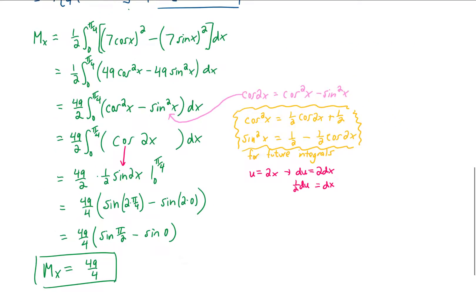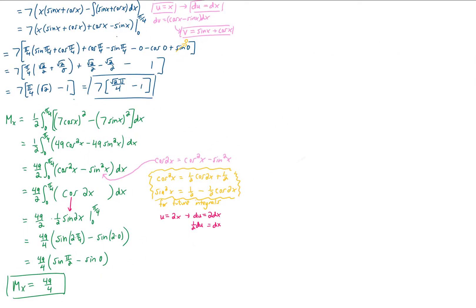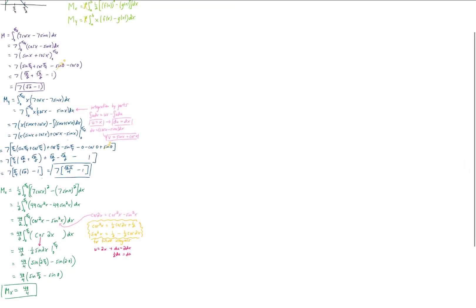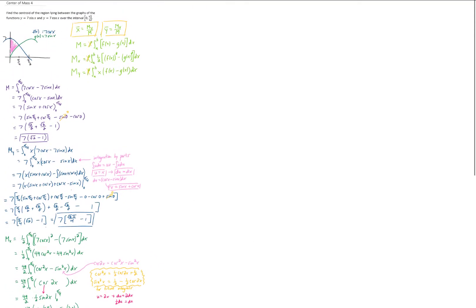we have all the pieces that we need to calculate the x-coordinate and the y-coordinate of our center of mass. Notice that way back at the beginning, we had that the x-coordinate of the center of mass was going to be m sub y over m. We just calculated m sub y to be 7 times the square root of 2 times pi over 4 minus 1. And we calculated m to be 7 times the square root of 2 minus 1. Now it might look like some things are going to cancel here, but really the only thing that can cancel is the 7. So that is going to be the final answer for the x-value of our center of mass.